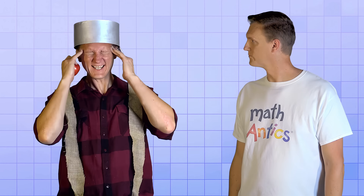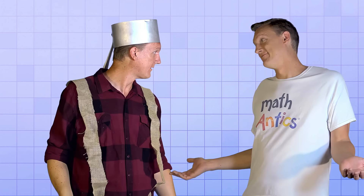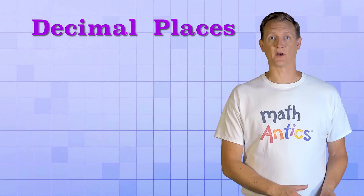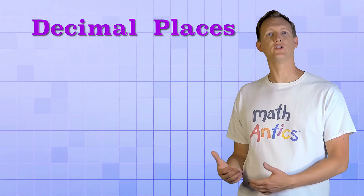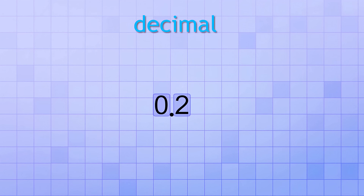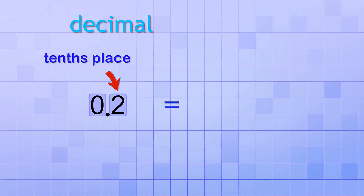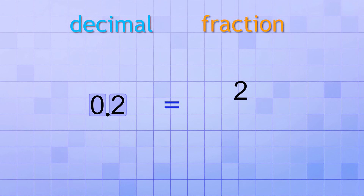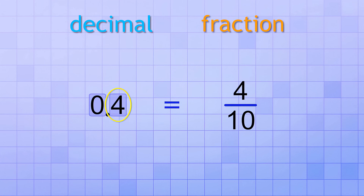That is truly amazing! In fact, it kind of makes my head hurt just thinking about it. Okay, so now that you know how decimal places work, let's talk briefly about how we can show their place value and how we can write decimal numbers in expanded form. A digit's value is determined by the place that it's in. So if a 2 is in the tenths place, it stands for 2 tenths, which can be written with the fraction 2 over 10. If a 3 is in the tenths place, that stands for 3 tenths, or 3 over 10. If a 4 is in the tenths place, that stands for 4 tenths, or 4 over 10, and so on.